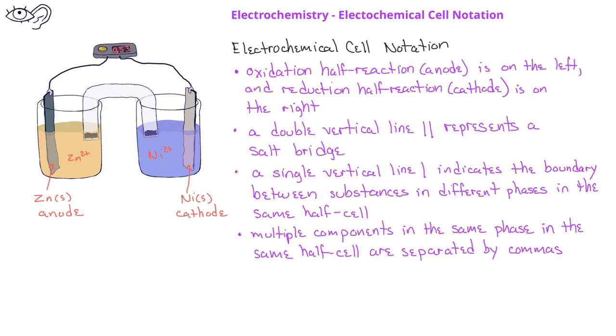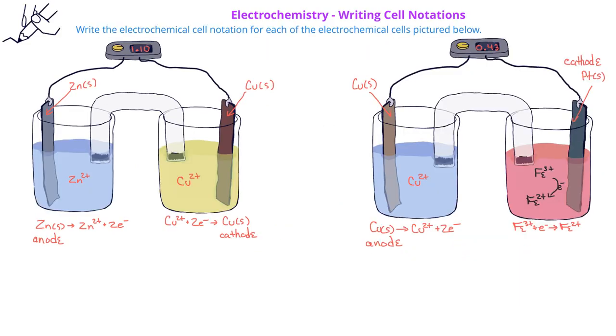Finally, if you have inert electrodes, they are also included in the electrochemical cell notation. In this problem, we're asked to write the cell notation for each electrochemical cell illustrated below.